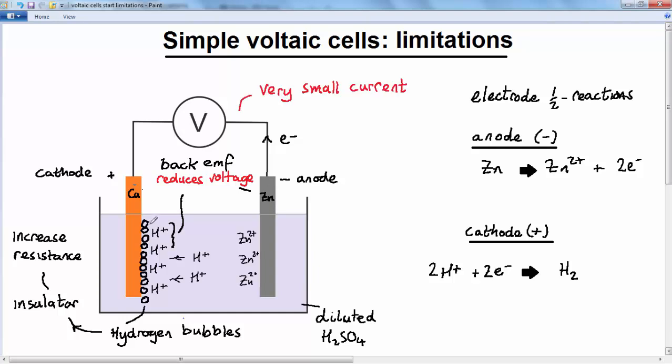Now, one of the cells that was devised to overcome this hydrogen problem was called the Daniel cell. And we'll look at that in the next lesson.